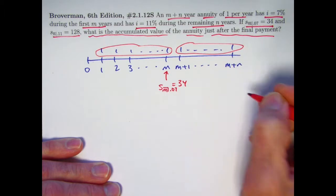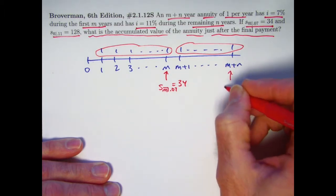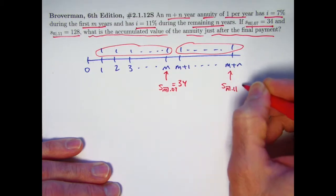And then for the last group of N payments, the future value immediately after the last payment is what we are labeling S_N with the 11% interest rate, and that is given to be 128.